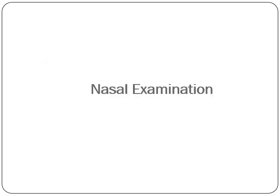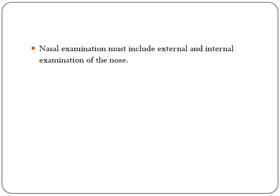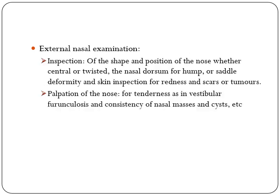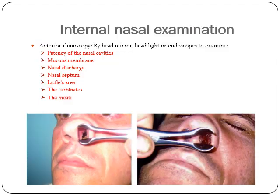Nasal examination must include external and internal examination of the nose. External nasal examination starts by inspection of the shape and position of the nose, whether central or twisted; the nasal septum for hump or saddle deformity; and skin inspection for redness, scars, or tumors. Palpation of the nose for tenderness, as in vestibular furunculosis, and consistency of nasal masses and cysts.